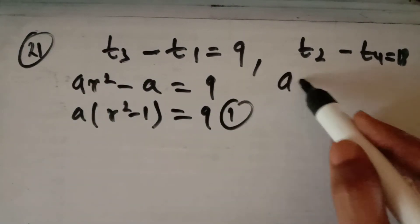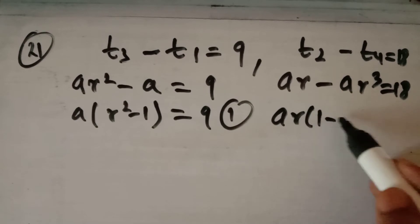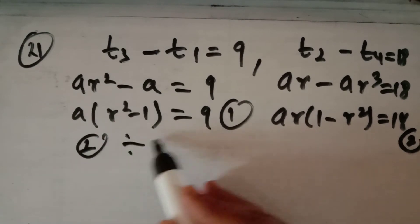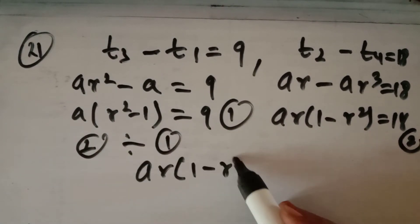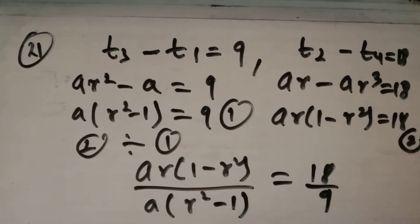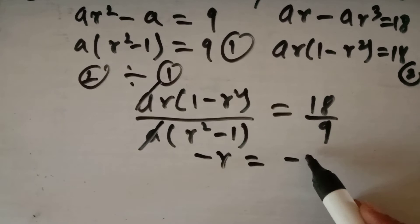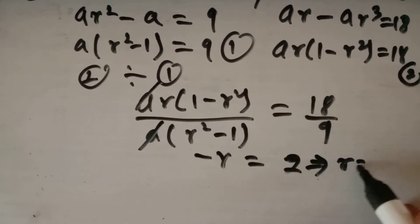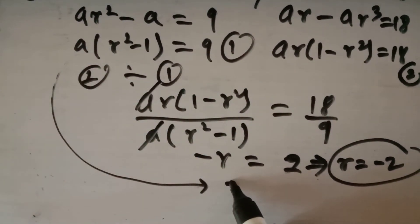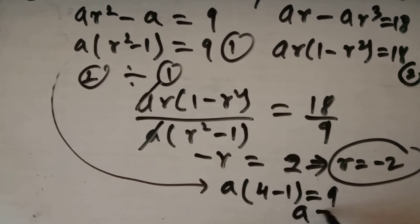The second equation is ar - ar³ = 18, giving ar(1 - r²) = 18. Dividing equation two by equation one: ar(1 - r²) / a(r² - 1) = 18/9 = 2. Taking minus common from (1 - r²), we get -r = 2, so r = -2. Substituting back into the first equation: a(4 - 1) = 9, giving a = 3.